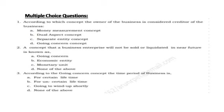Next, according to the going concern concept, the time period of the business is generally close to 12 months. The options are: for certain lifetime, for uncertain lifetime, going to wind up shortly, or none of the above. The answer is none of the above.